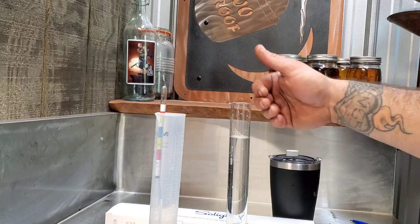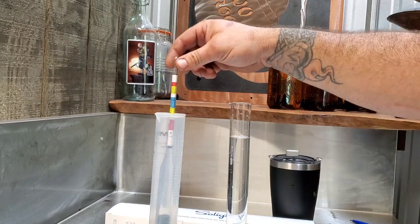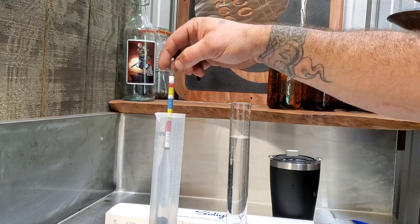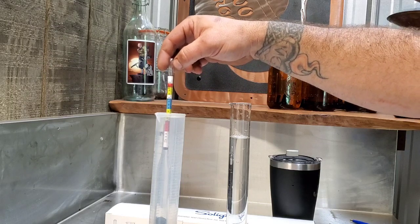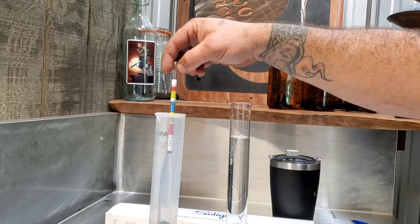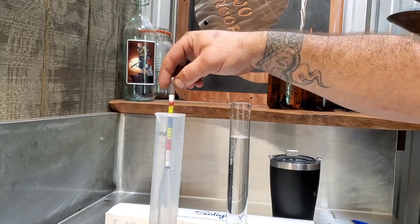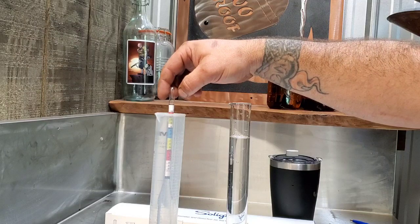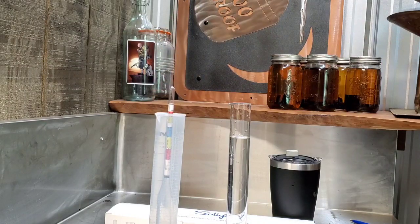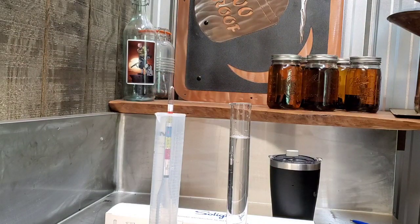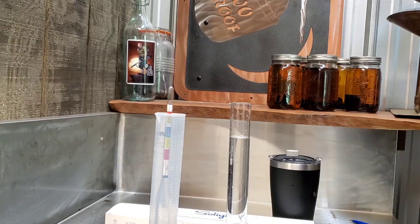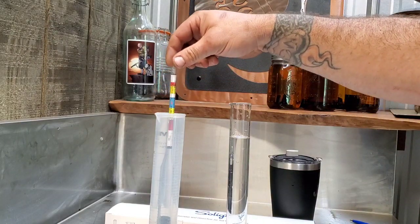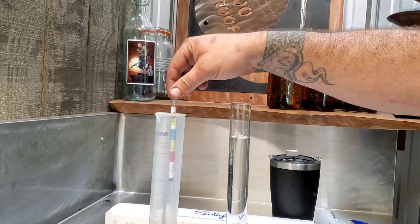So as you saw with our sugar, we started somewhere up around 1.080. As our yeast converts the sugar to alcohol, our gauge drops until we get down below one. That way we know there is no sugar left in our mash. So that's what we're shooting for. We want to start somewhere in this area and end up down here.